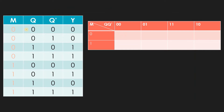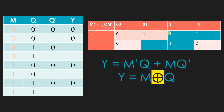Using a K-map with the truth table values, we can simplify. We get m-bar·Q plus m·Q-bar, which is nothing but m XOR Q. So the equation for Y is simply m XOR Q.